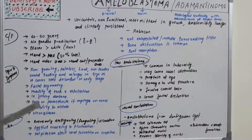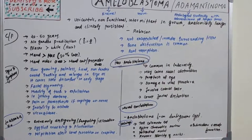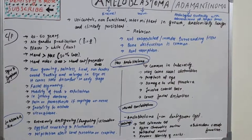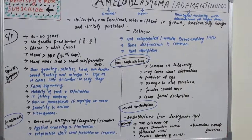Additional symptoms include pain or paresthesia if nerves such as the inferior alveolar or facial nerve are impinged, inability to occlude, and ulcerations. The tumor is slowly growing with little discomfort in early stages, so it continuously grows unless prominent clinical symptoms appear.